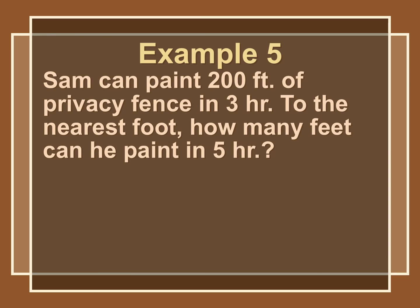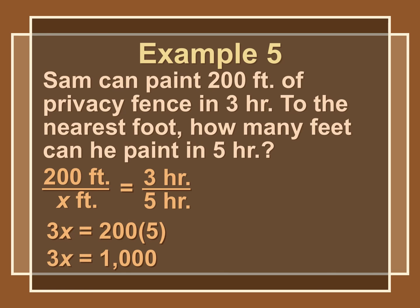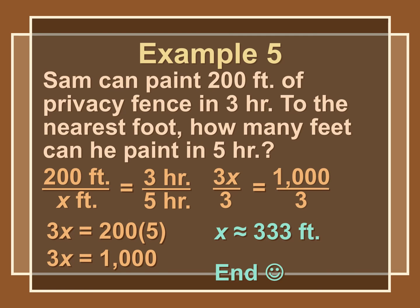Another example: we can paint 200 feet of fence in 3 hours. How many feet can we paint in 5 hours? Our original ratio is 200 feet per 3 hours, and our new ratio is x feet per 5 hours. Cross-multiplying gives x equal to approximately 333 feet.